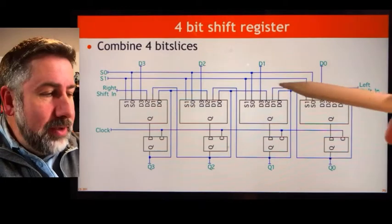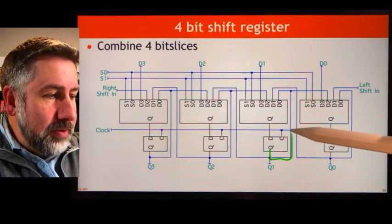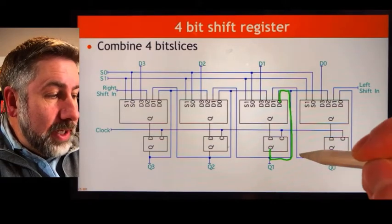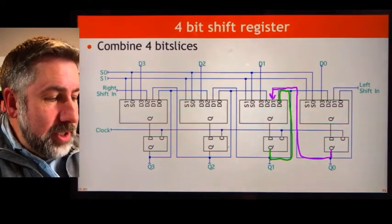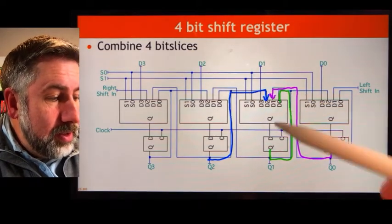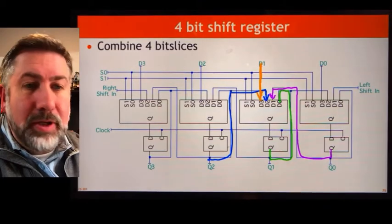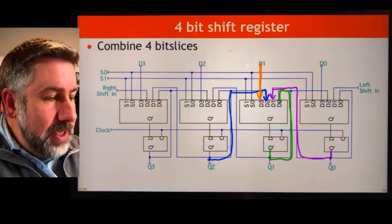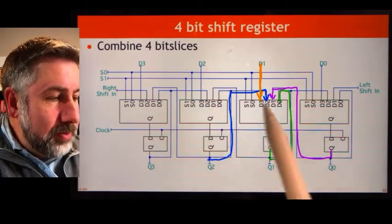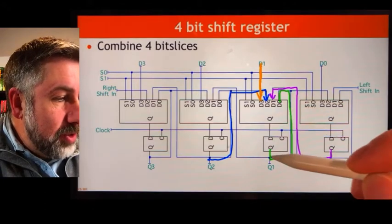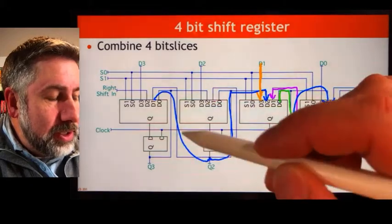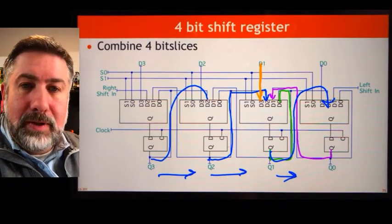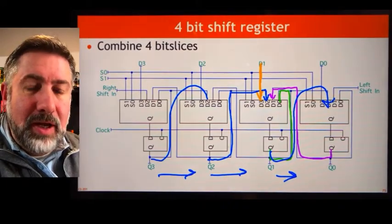Each individual slice can take information from the current value, from the slice to the right if shifting left, from the slice to the left if shifting right, or from the outside world in a load. If you ask this register to shift a value one bit to the right, each flip-flop takes a value routed from the previous flip-flop — one to the next, one to the next — and the whole value shifts one bit to the right. The same applies shifting left.